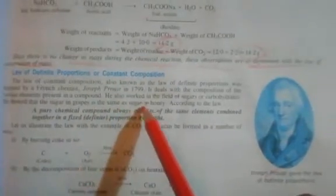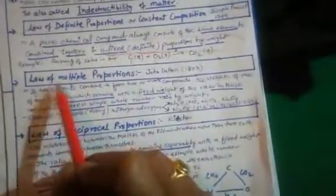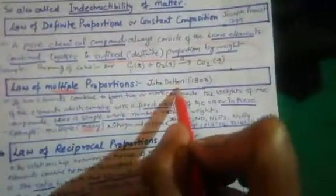Joseph Proust worked in the field of sugar and carbohydrates and showed that the sugar in grapes is the same as the sugar in honey. This is an example from daily life that follows the Law of Definite Proportion.